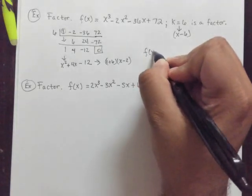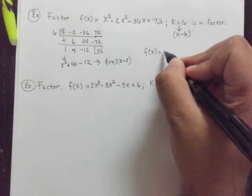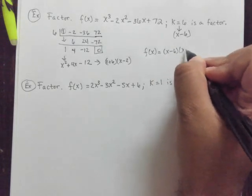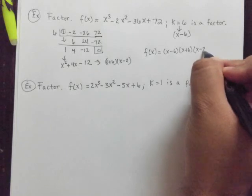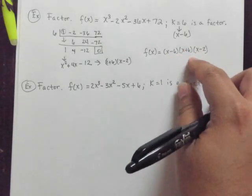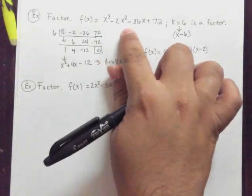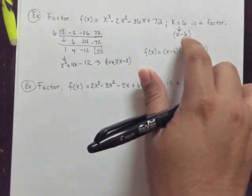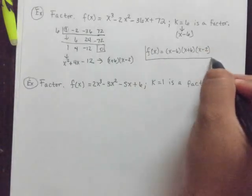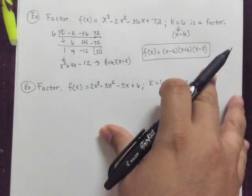Our factors for the polynomial f of x is x minus 6 times x plus 6 times x minus 2. So if you were to multiply these three binomials, you'd end up with this right here. This is the answer to this one. And let's take a look at one more example here.